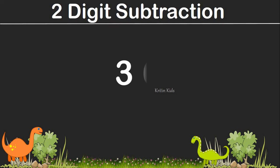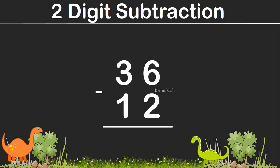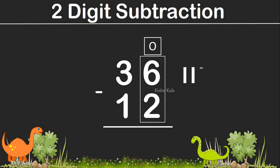Here is our first example: 36 minus 12. We should start subtraction from the one's position. On the one's position, we have the first number as 6 and the second number as 2. So let's draw 6 lines. Of these 6 lines, we have to cut 2 lines. So how many are remaining? 1, 2, 3, 4. So 6 minus 2 is 4.